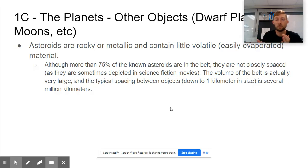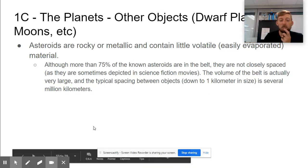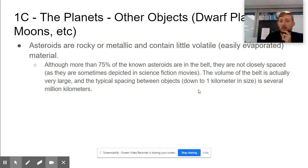The volume of the belt is actually really big. Typical spacing between objects down to a kilometer in size is several million kilometers. That's huge—you wouldn't even see another asteroid. You're traveling in space where things are very spaced out.